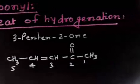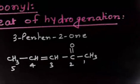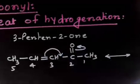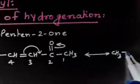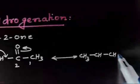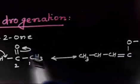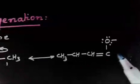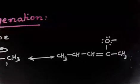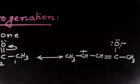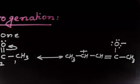Now let us write the resonating structure of this molecule. Using arrow pushing: you will have CH3, then CH, then CH again with a double bond shifted, and then C=O becomes C-O⁻ with a lone pair on oxygen. So the resonating structure has a negative charge on oxygen and the adjacent carbon carries a formal positive charge.